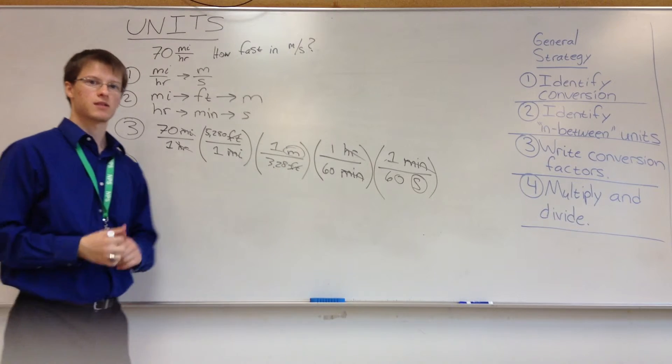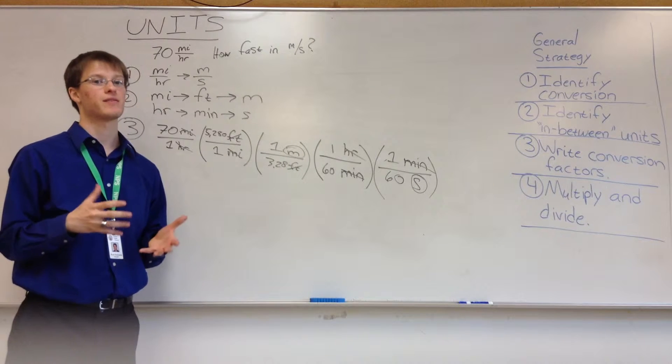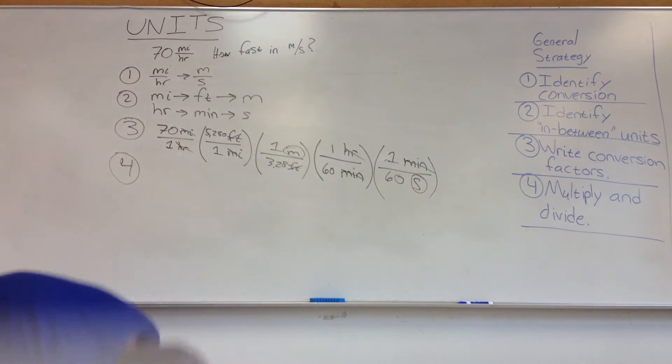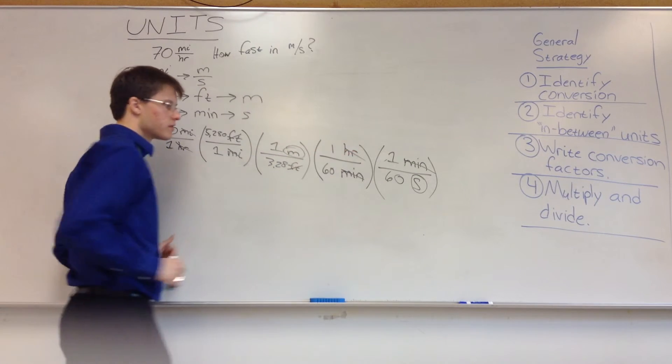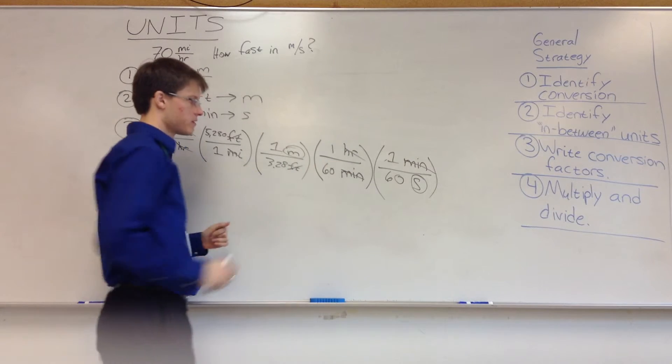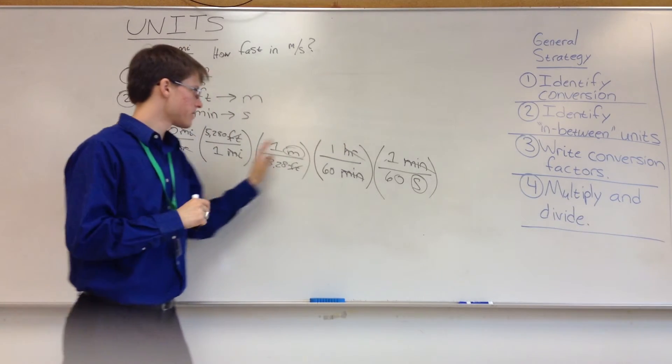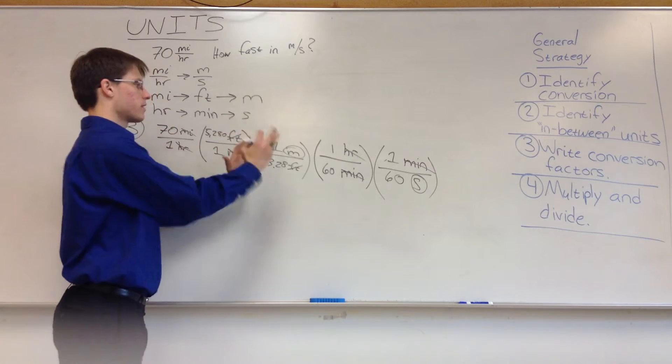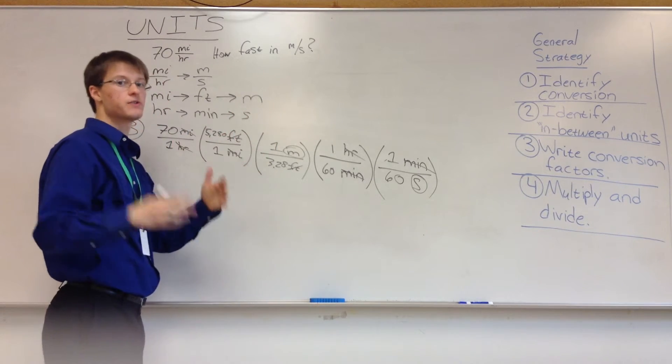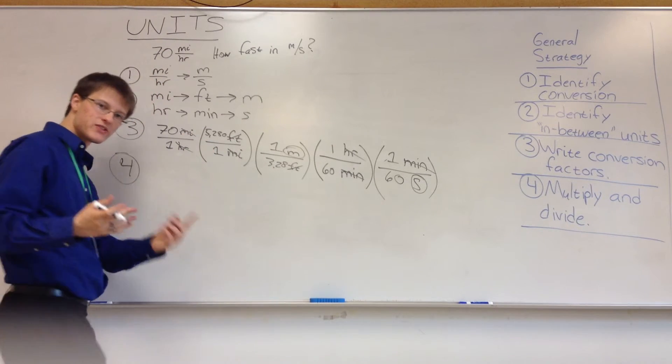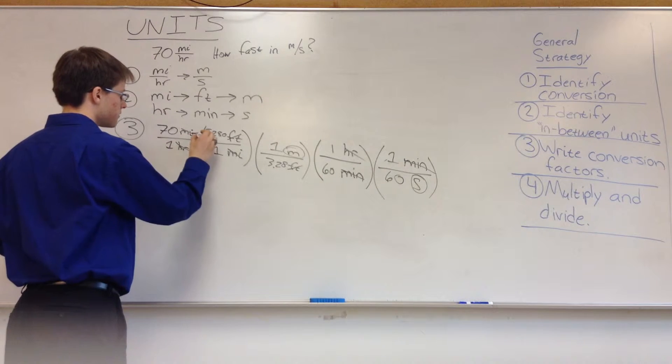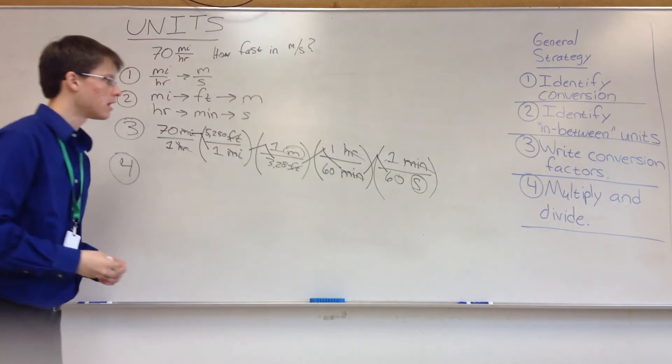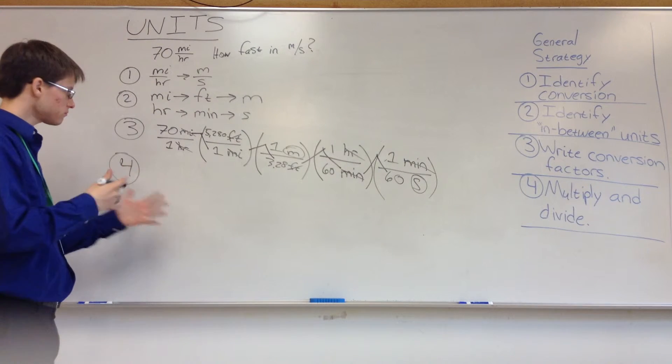Now, step 4 conceptually is not very tricky, but can be tricky when you're inputting everything into the calculator. Because what you're going to find is that the calculator might not always do what you want it to. So there are a few ways you can do this. You can multiply all the numerators, take note of what that number is, multiply all the denominators, take note of what that number is, and then divide the product of the numerators by the product of the denominators. One way to do it. So you can also, if your calculator has parentheses, you can use parentheses to just set up this exact conversion factor, set of conversion factors, do it that way. You can also say, I call it the zigzag. You can say, 70 times 5280 divided by 1, times 1 divided by 3.28, times 1 divided by 60, times 1 divided by 60. And that will also give you the correct answer. A few different ways to do it.